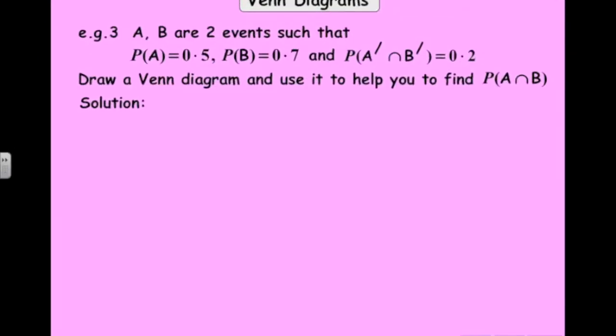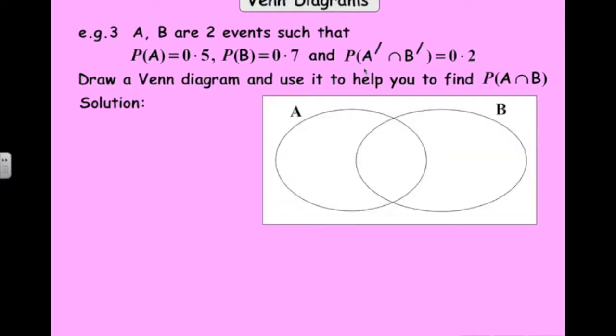We've got two events here. The probability of A is 0.5. The probability of B is 0.7. And this one here is a bit tricky. The probability of A complement intersection B complement is 0.2. Let's look at the Venn diagram here. The probability of A and B, let's say that that's p. So the probability of A, if the whole circle here has to be 0.5, that means this area here has got to be 0.5 minus p. Same with B. The whole of B is 0.7. This part here has got to be 0.7 minus p. Then if you add that circle up, you get 0.7. That's tricky.